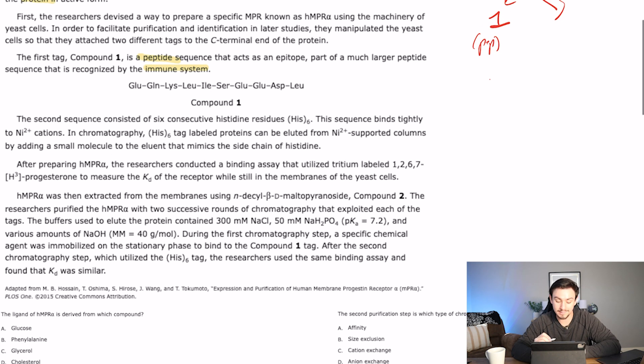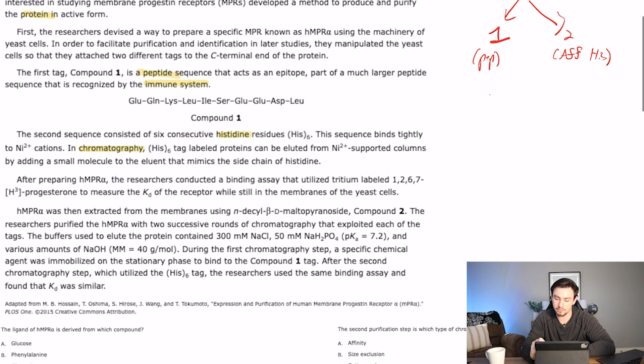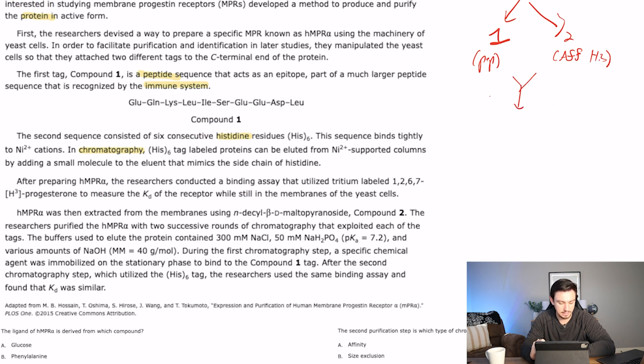The second sequence consisted of six consecutive histidine residues. Remember, histidine's an amino acid. The sequence binds tightly to nickel cations. In chromatography, histidine's six-tag labeled proteins can be eluted from nickel 2+ supported columns by adding a small molecule to the eluent that mimics the side chain of histidine. Okay, so they're talking about chromatography here. What type of chromatography are they referencing? They're referencing affinity chromatography here. And histidine is actually the classic example of affinity chromatography.